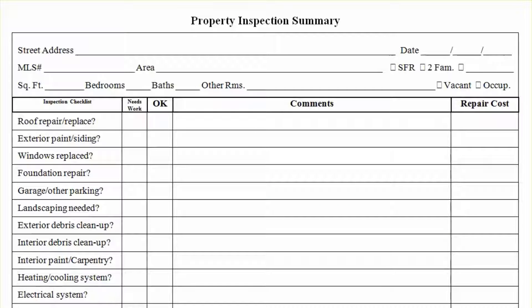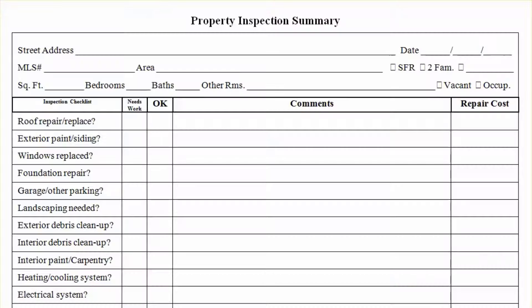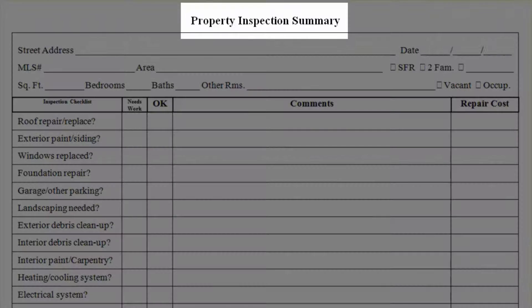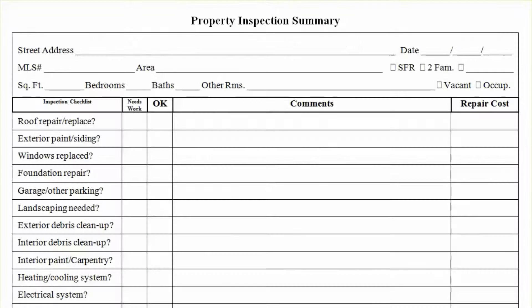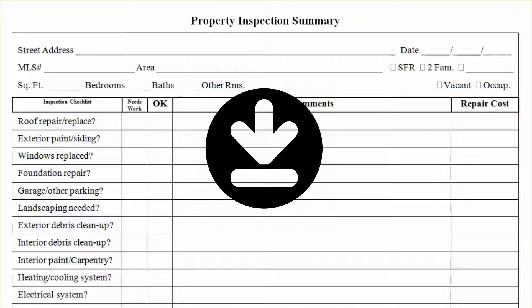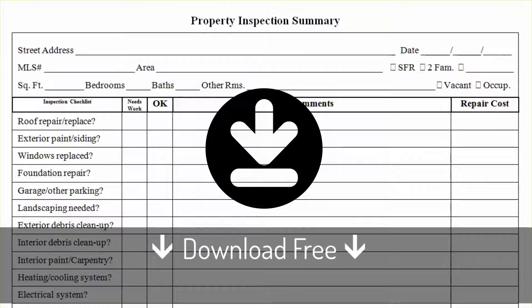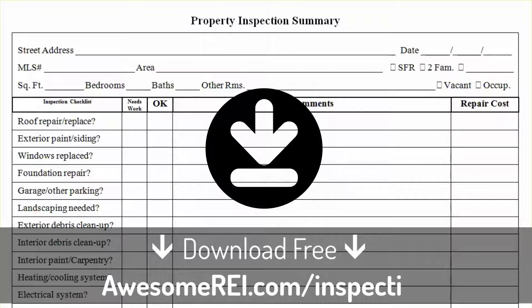Hey, what's up guys? JP Moses here. Hope you're doing well. In this video, I just want to quickly run through a neat little form I put together many moons ago and we still use — we use it a little differently than we used to though. It's the property inspection summary that you see here before you. Now it's a pretty darn simple document, so there's really not a lot that I need to explain to you, but I think it may be helpful to walk through a couple of elements on it and explain how we use it today.